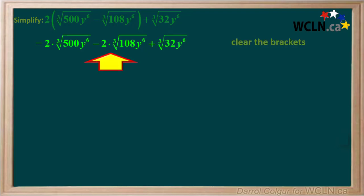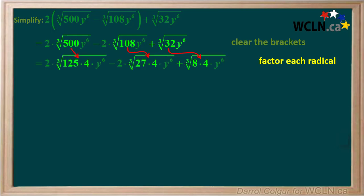Now we're left with this expression. Now we'll factor any radicals we can. 500 is 125 times 4, and 108 is 27 times 4, and 32 is 8 times 4.